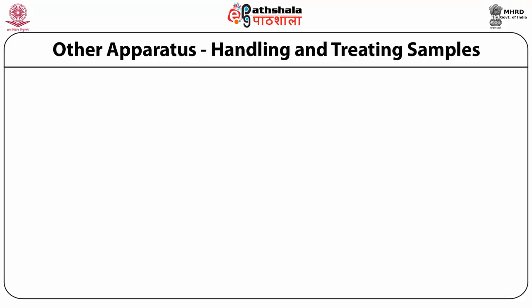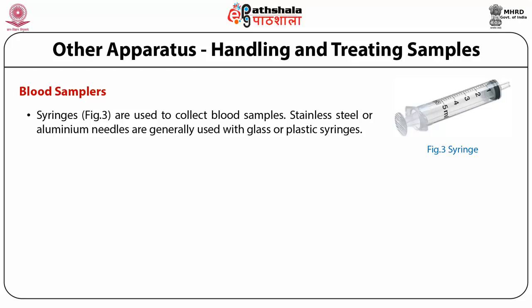Besides apparatus for measuring mass and volume, there are a number of other items of equipment commonly used in analytical procedures. Syringes are used to collect blood samples. Stainless steel or aluminium needles are generally used with glass or plastic syringes. These usually present no problem of contamination, although special precautions may be required for certain trace element analysis.